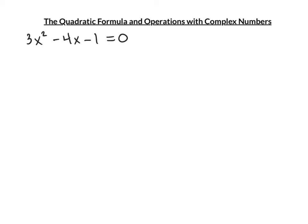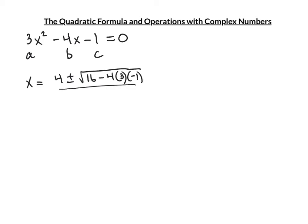Here's another example that does not come out nice. a is in front of the square, b is in front of x, c is the last number. x = opposite of b, that's 4, plus or minus √(b²). Negative 4 squared = (-4)(-4) = positive 16. Minus 4 times a times c, all over 2 times a = 2×3.